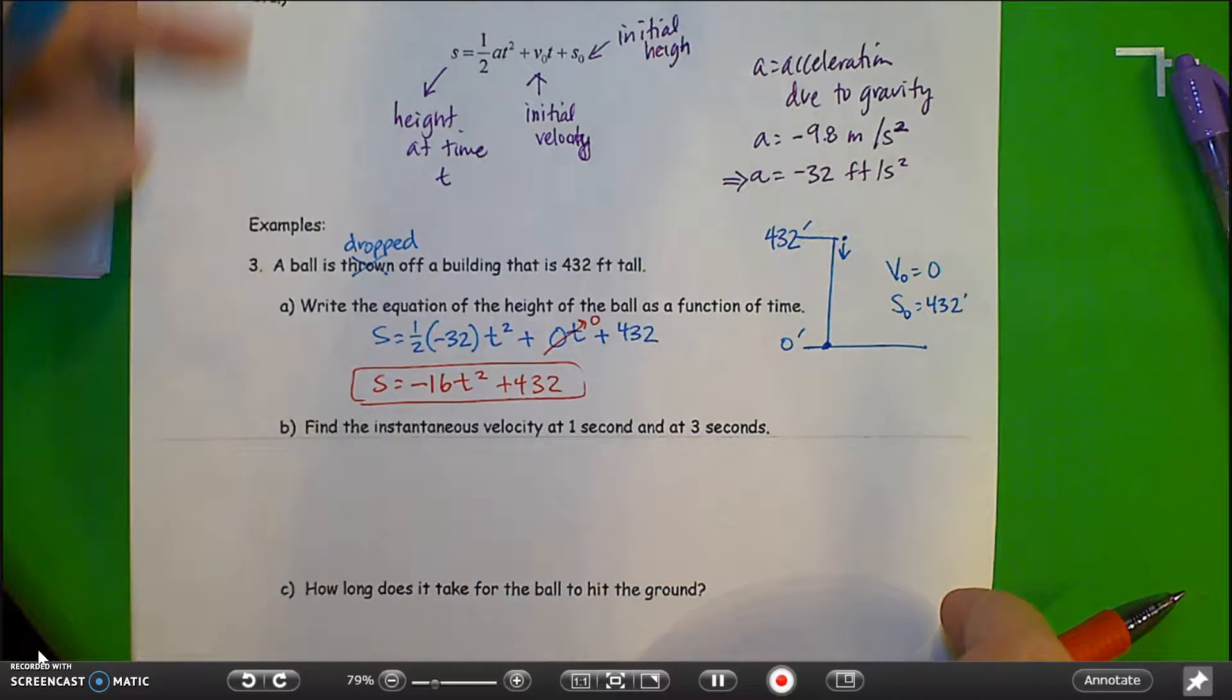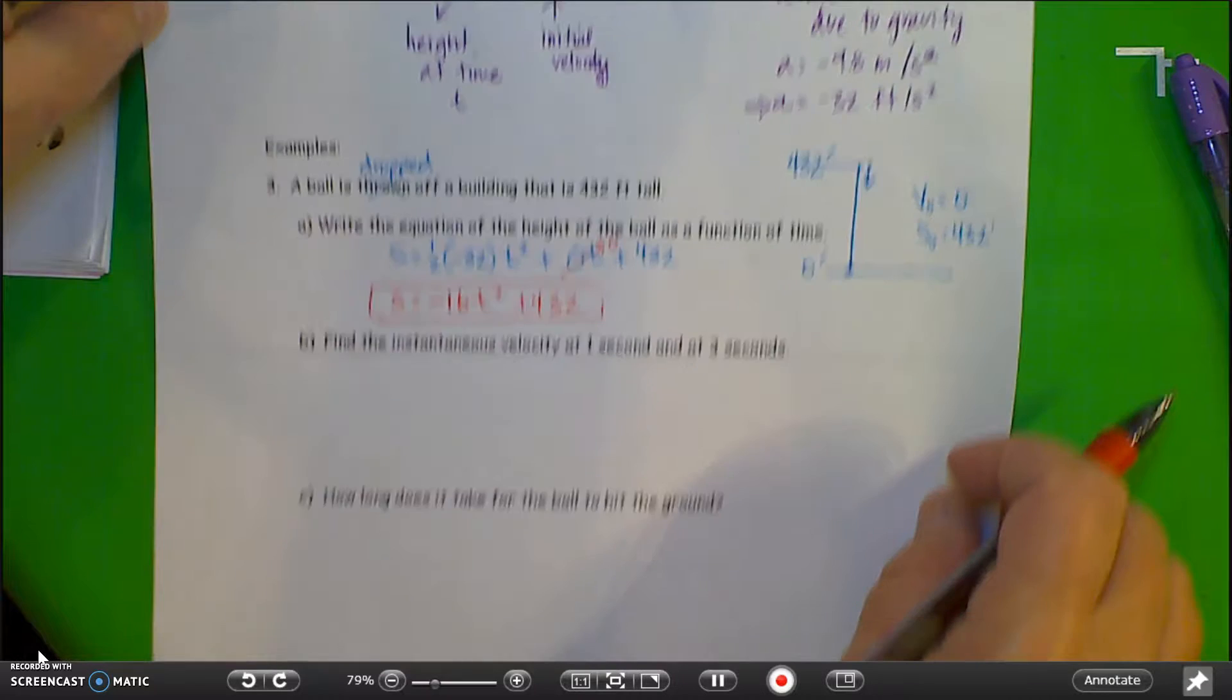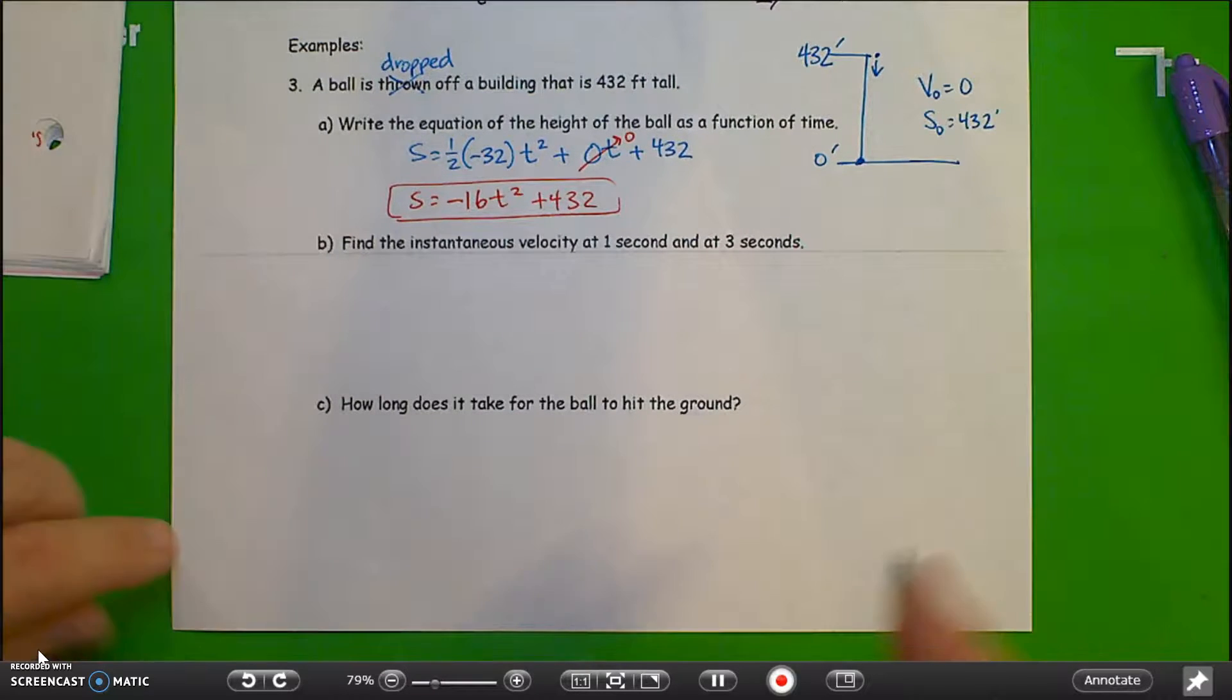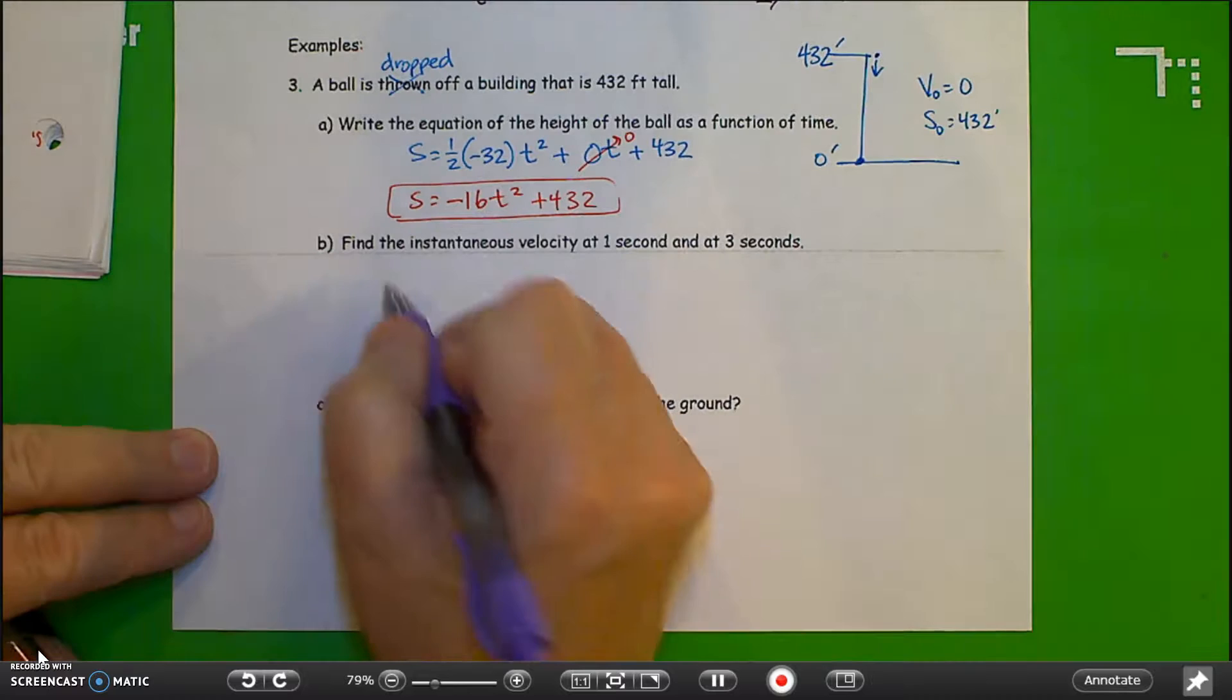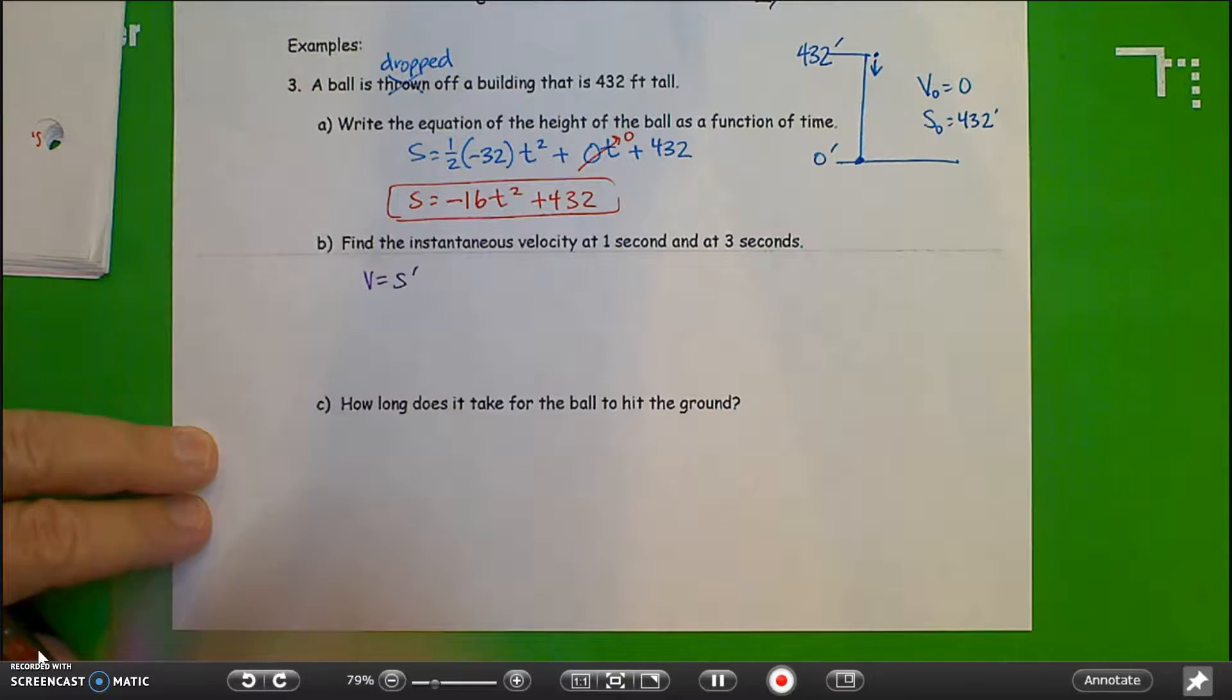Find the instantaneous velocity at one and three seconds. We should remember that velocity is equal to the derivative of height, in this case, or position. It's the rate of change of height in this problem.